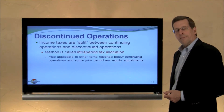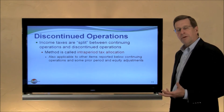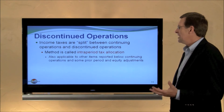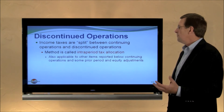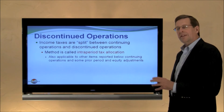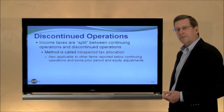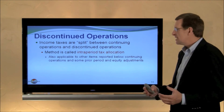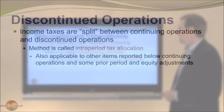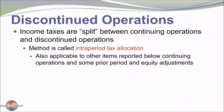Importantly, the effects of discontinued operations are shown net of taxes. Income taxes are split between continuing operations and taxes relating to discontinued operations. This is referred to as intra-period tax allocation, and it is also applicable to other items reported below continuing operations, as well as prior period adjustments and certain equity effects that are sometimes shown net of their related tax consequence.